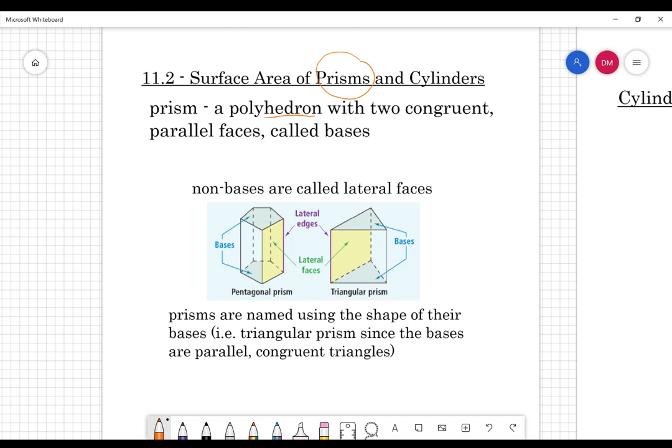So a prism is a polyhedron with two congruent parallel faces that we call bases. So this is key right here, that both of those bases are congruent and parallel is part of the definition and how we know that we have a prism.